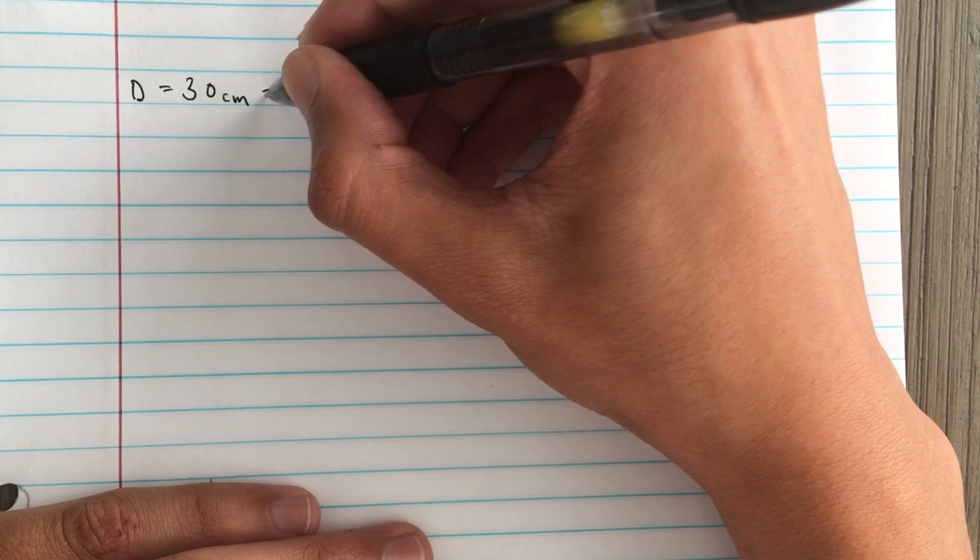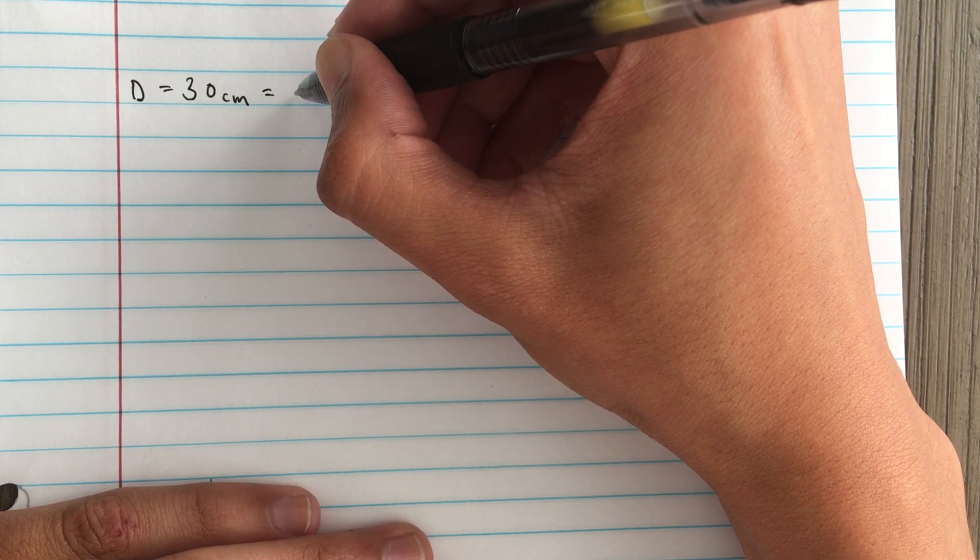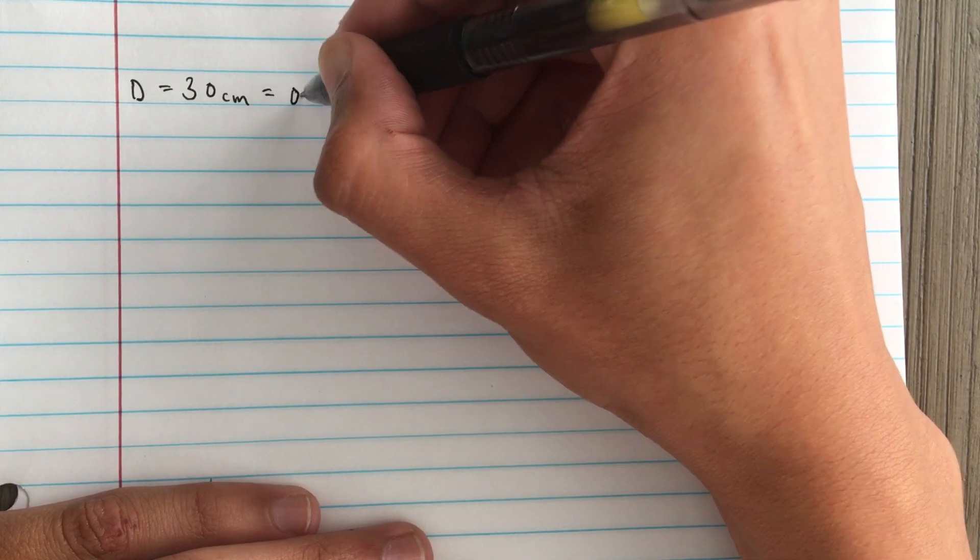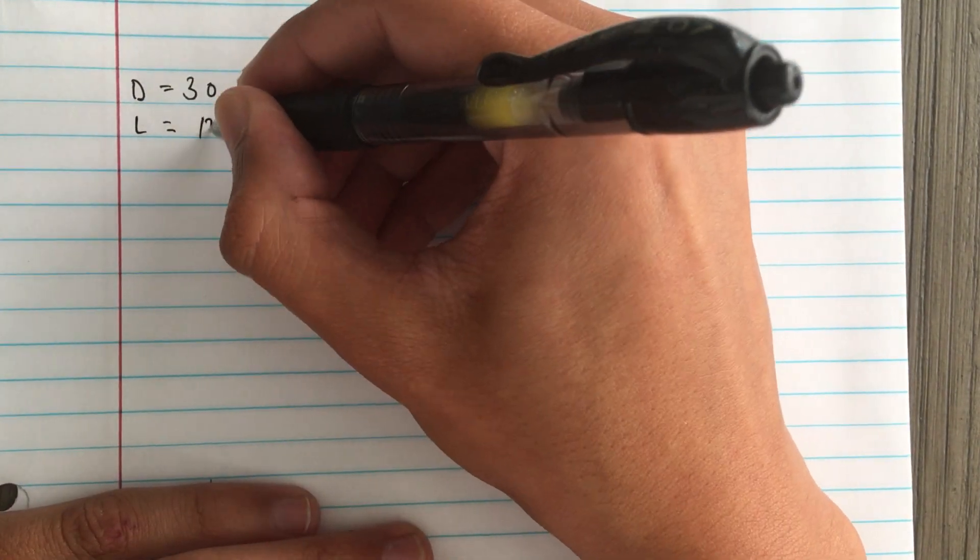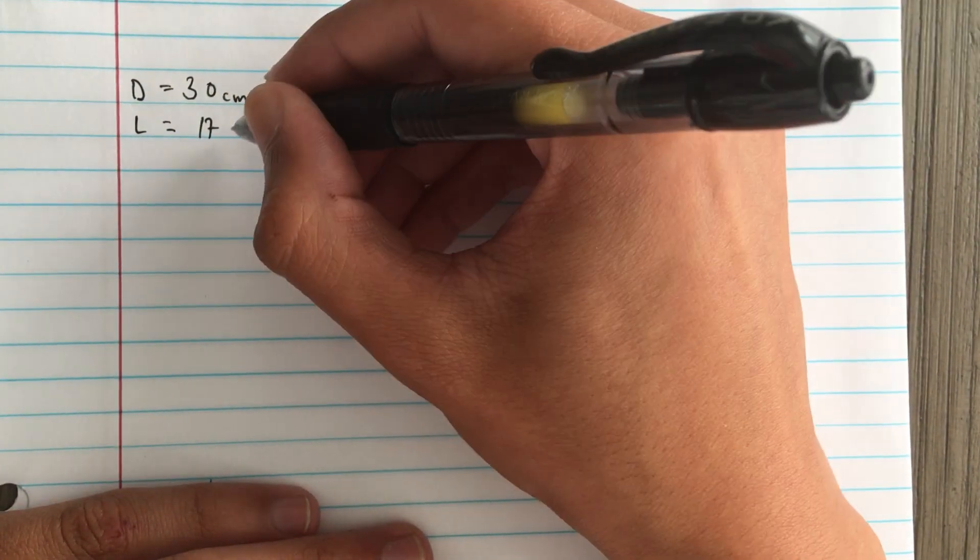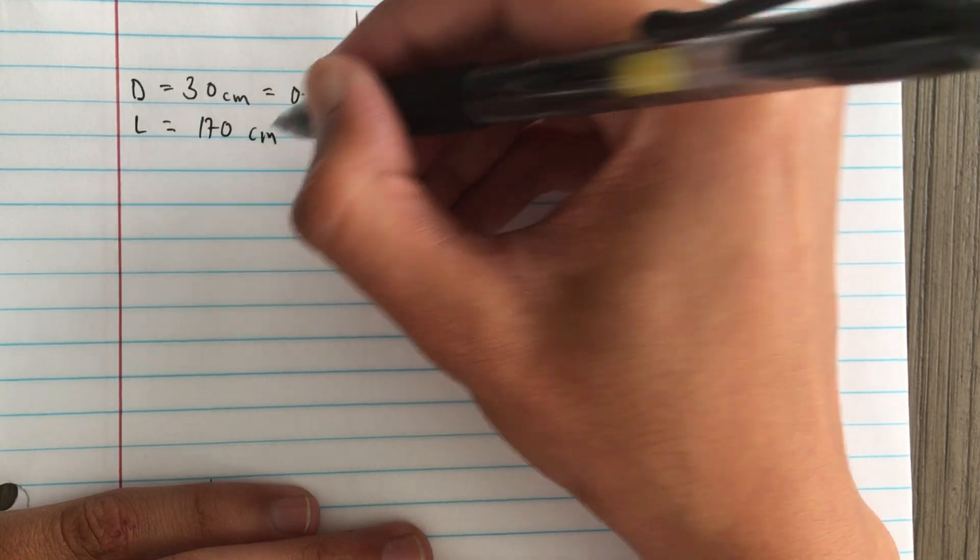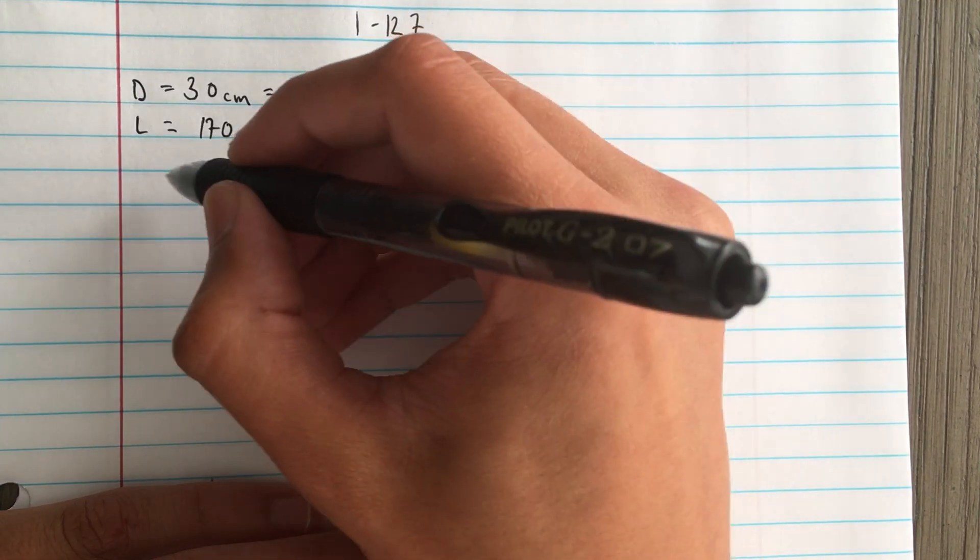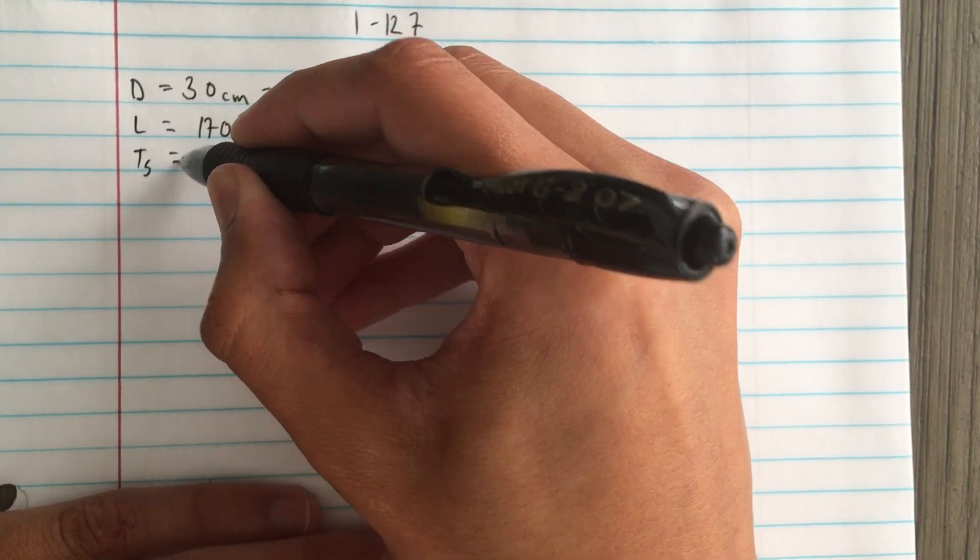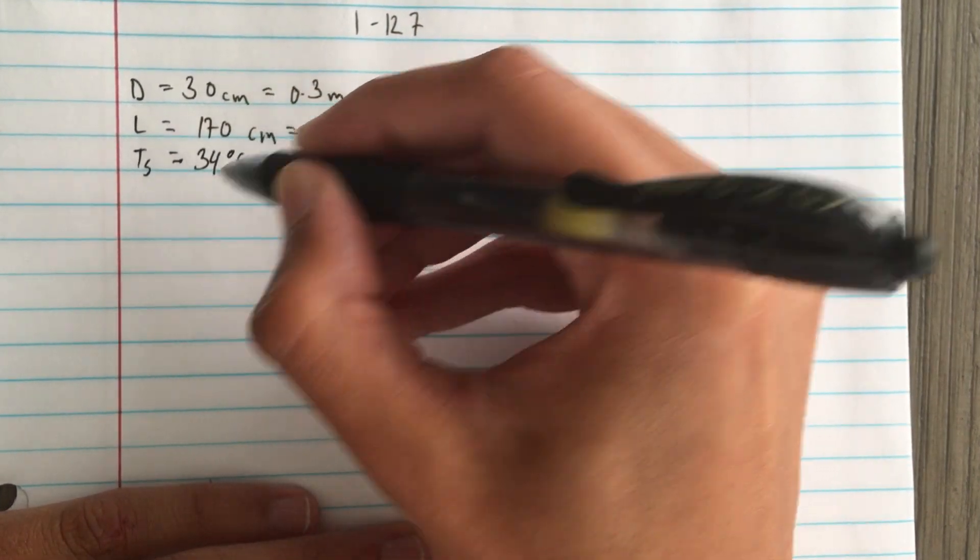Diameter is 0.3 meters, length is 1.7 meters, and Ts is 34 degrees Celsius.